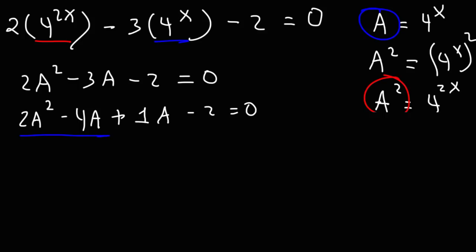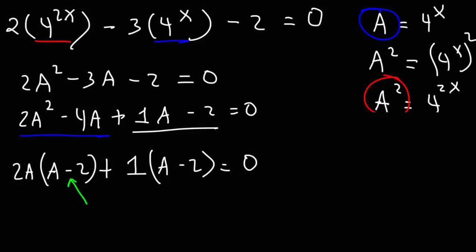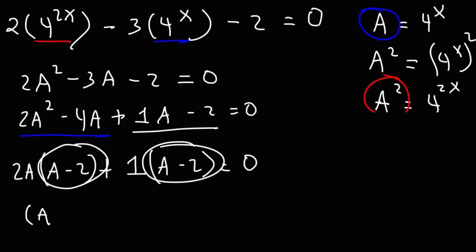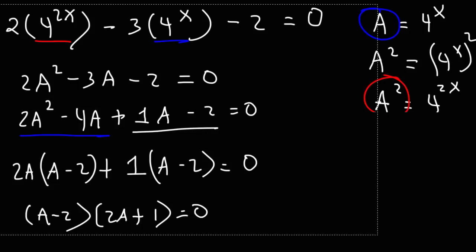In the first two terms, we're going to take out the GCF, the greatest common factor, which is 2a. 2a squared divided by 2a is a, and negative 4a divided by 2a is negative 2. In the last two terms, the only thing we can factor is a 1, so that gives us a minus 2. If these two binomials are the same, you're on the right track. Now we're going to factor out a minus 2. If we take away a minus 2 from the first term, we're left with 2a, and factoring out a minus 2 from the second term, we're left with plus 1.